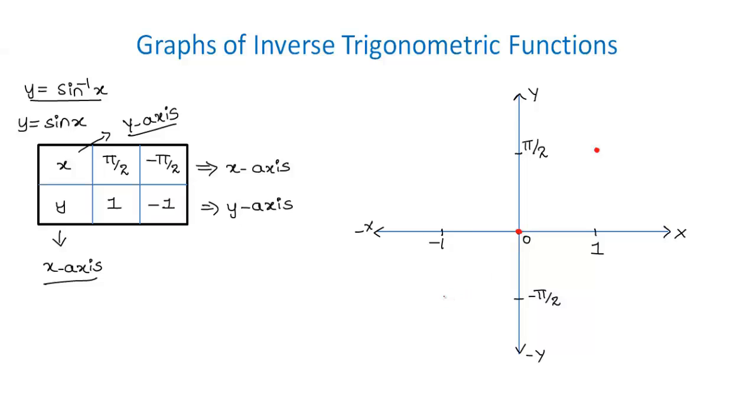And then the next value is minus pi by 2 comma minus 1. So here we get a point.